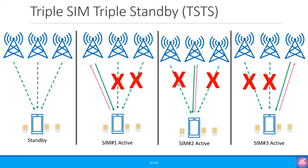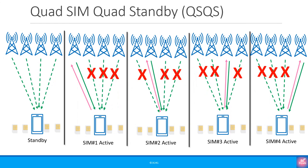You can extend the concept of dual SIM dual standby to a device with three SIM cards — it will thus become triple SIM triple standby, or TSTS. The same way for four SIM cards, it is called quad SIM quad standby, or QSQS. The generic term is multiple SIM multiple standby, or MSMS. Remember, only one SIM can be active at any time.